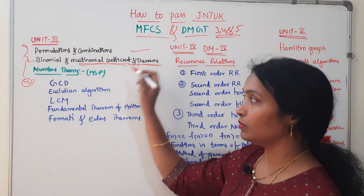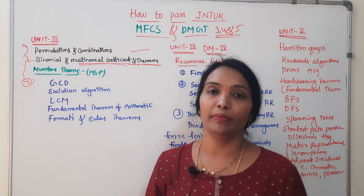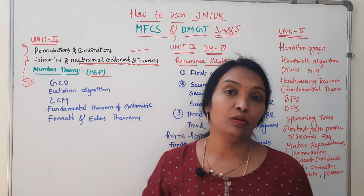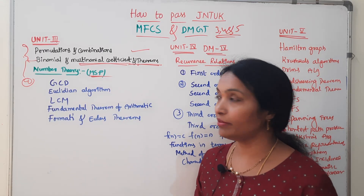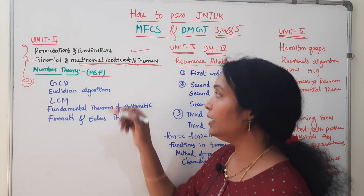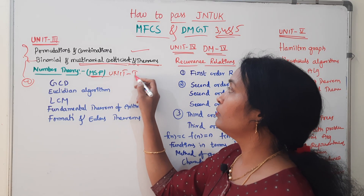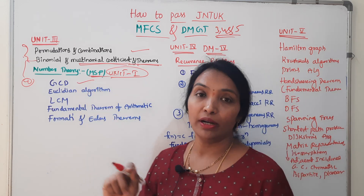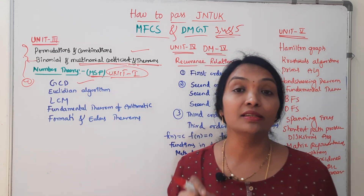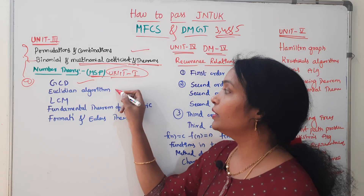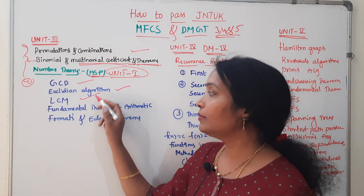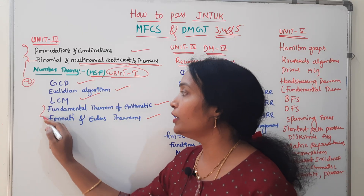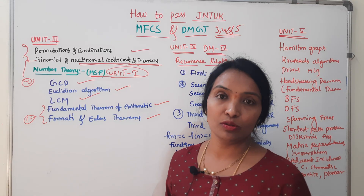If you don't like this, I will prepare you perfectly. There is a playlist for MFCS Unit 1 in my channel. What is important? GCD — Greatest Common Divisors — Euclidean Algorithm, LCM, Fundamental Theorem of Arithmetic, and Fermat and Euler's Theorem. In these units, there is a theory component that is compulsory.